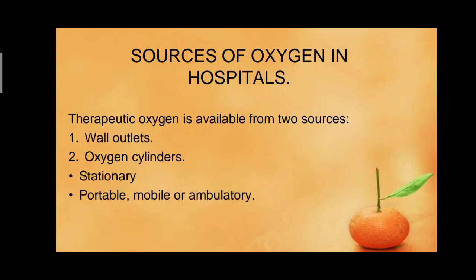Now, sources of oxygen in hospitals. Therapeutic oxygen is available from two sources: number one, wall outlets — or central line oxygen; number two, oxygen cylinders, of which there are two types: stationary and portable or mobile ambulatory. Stationary oxygen cylinders are fixed and cannot move from place to place, while portable or mobile ambulatory cylinders are easy to transport and are mostly found in ambulances and home therapy treatments.